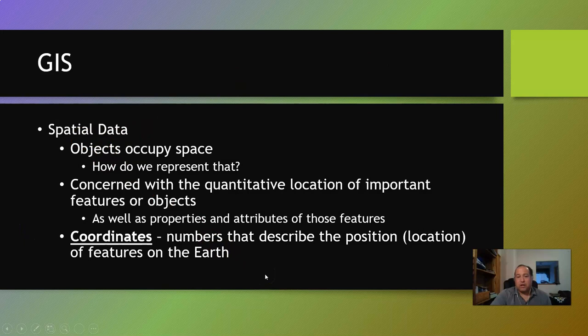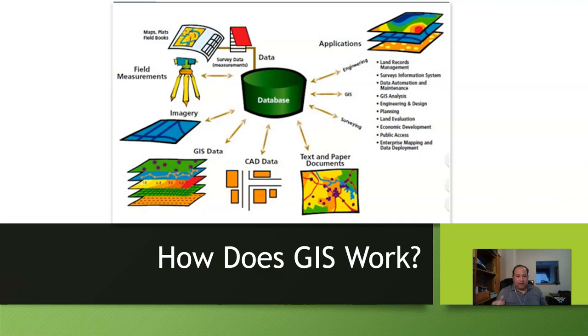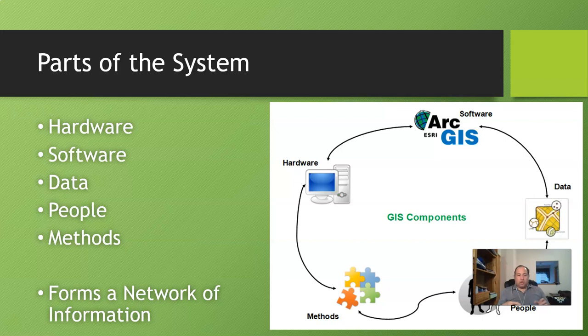GIS is a system, and so it's a lot of different moving parts that come together to give us the information that we need. There are five parts to the GIS system: hardware, software, data, people, and methods. Some people would say there's a sixth part — the idea that those five parts together form a network of information. Either way is correct, but you combine hardware, software, data, people, and methods all together into a network of information.